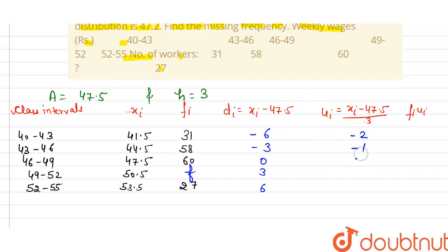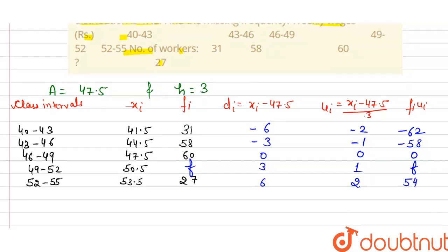Now calculate fi*ui, means product of this: 31 multiply minus 2, that is minus 62. 58 multiply minus 1, that is minus 58, 0, f, and now 54.